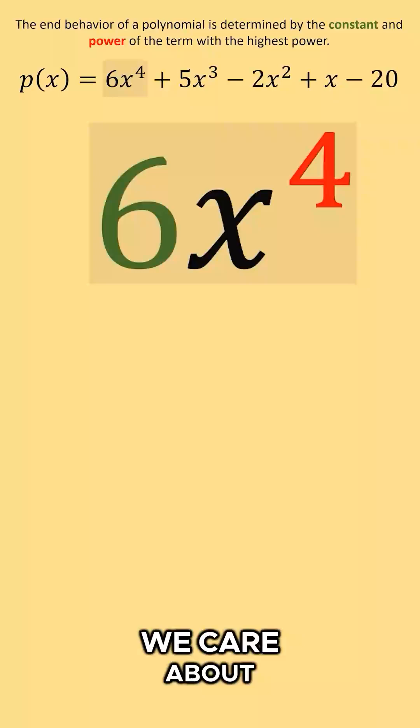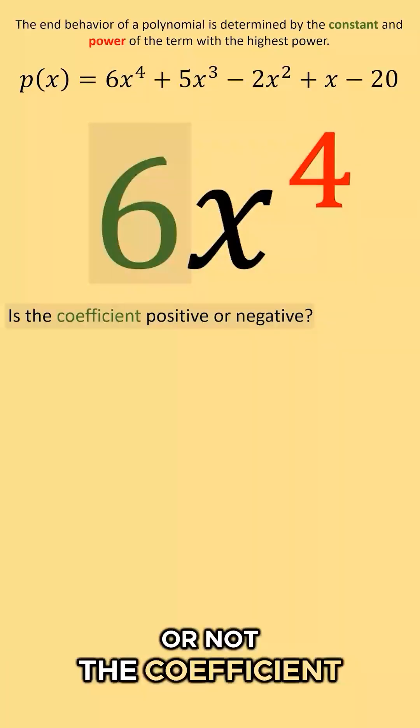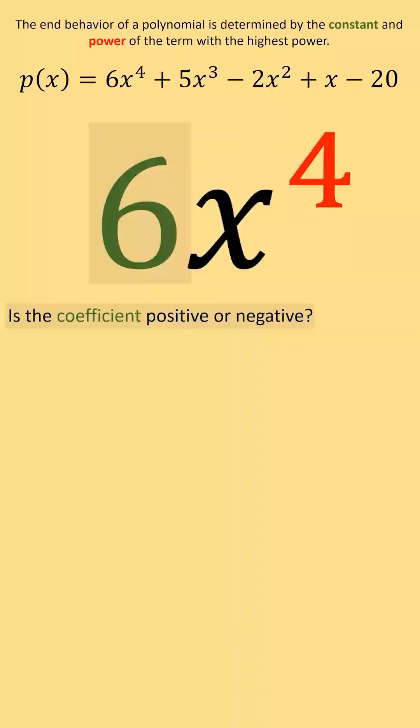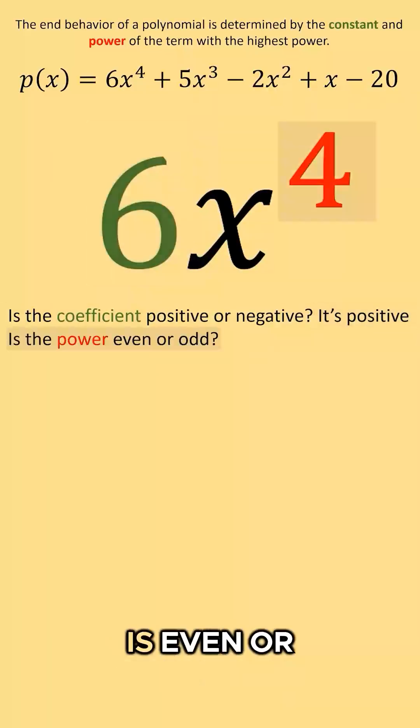And the two things we care about in terms of 6x to the 4th is whether the coefficient is positive or negative—in this case 6 is positive—and then we also care about whether the power is even or odd, and in this case 4 is even.